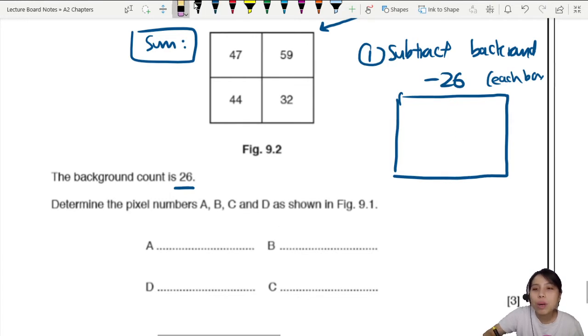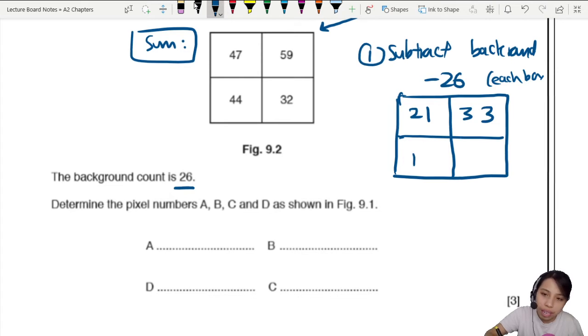From each box, minus 26, you got to press your calculator. If you haven't tried this yet, pause the video and try to see if you can get it. But if you've tried it out, you'll find that this is 21, 33, 18, and 6. So minus 26 from each box. Step one.